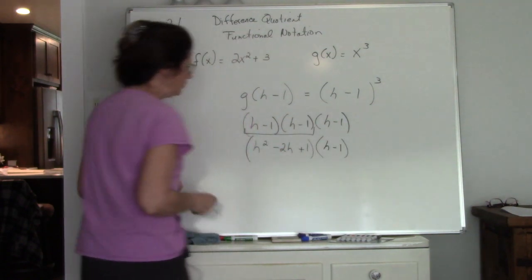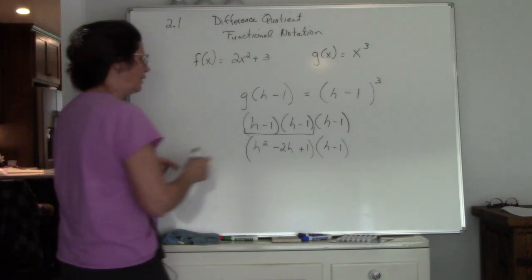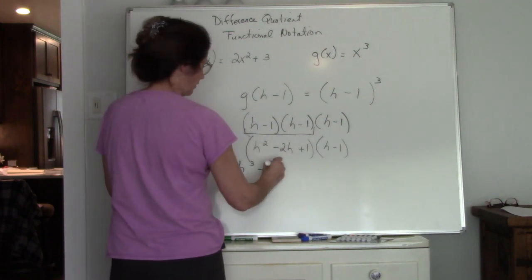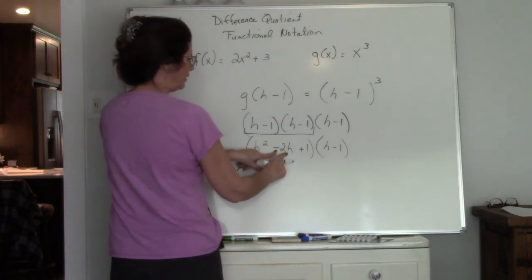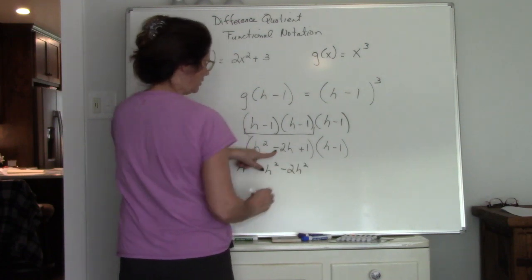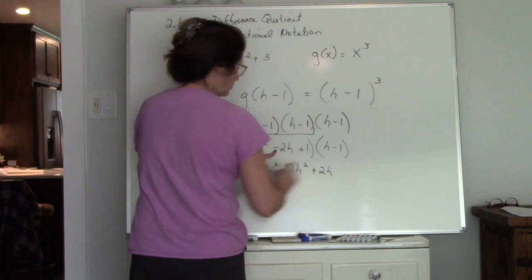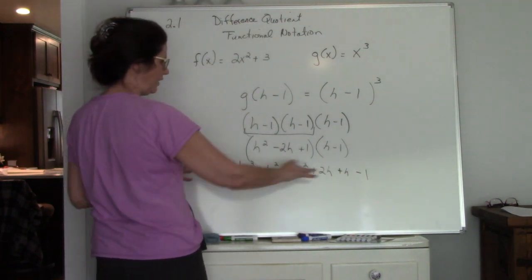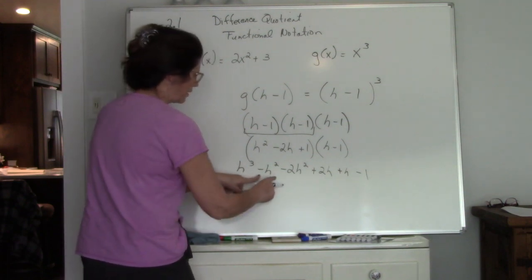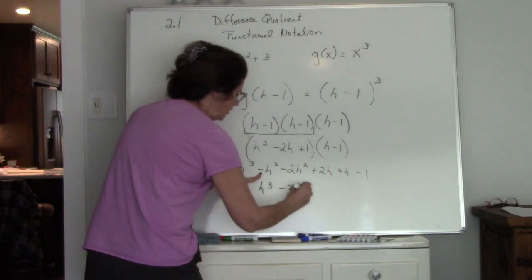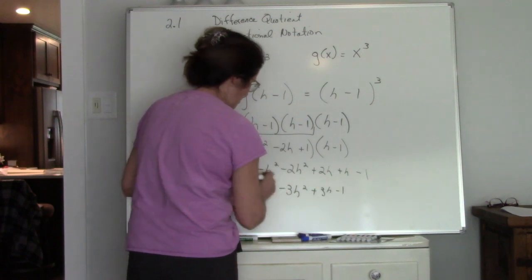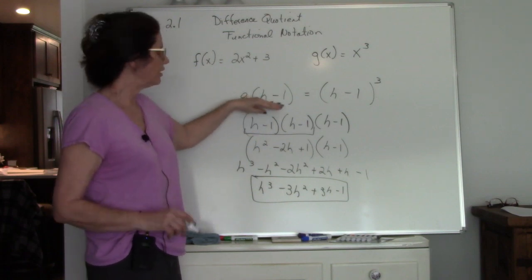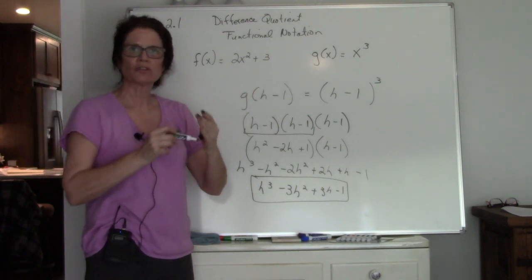Now multiply that trinomial by the third (h-1). Distributing: h squared times h is h cubed, h squared times negative 1 is negative h squared; negative 2h times h is negative 2h squared, negative 2h times negative 1 is plus 2h; 1 times h is h, 1 times negative 1 is negative 1. Combining like terms: h cubed, negative h squared minus 2h squared gives negative 3h squared, 2h plus h gives 3h, minus 1. So g(h-1) equals h cubed minus 3h squared plus 3h minus 1.